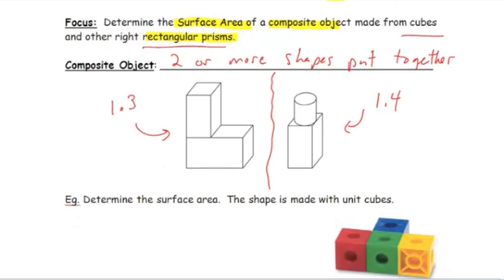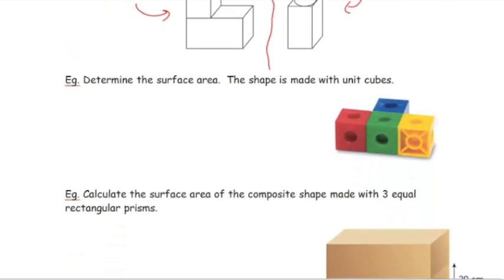Just a couple of examples here. Determining the surface area is just adding up the areas of all of the faces. So this shape is made with a unit cube. What a unit cube means is that each face is one, and we'll give it units of centimeters. That means that this is one centimeter and this base is one centimeter. So the area of each face is just going to be one times one or one centimeter squared.